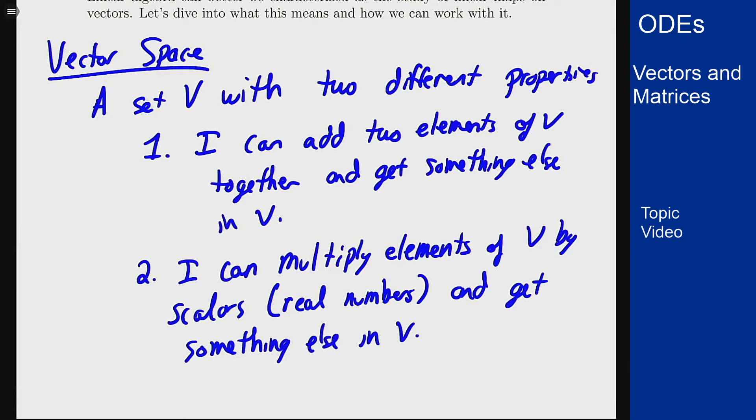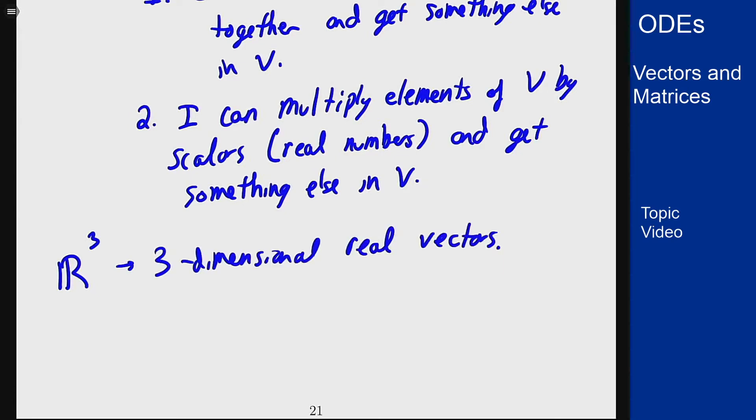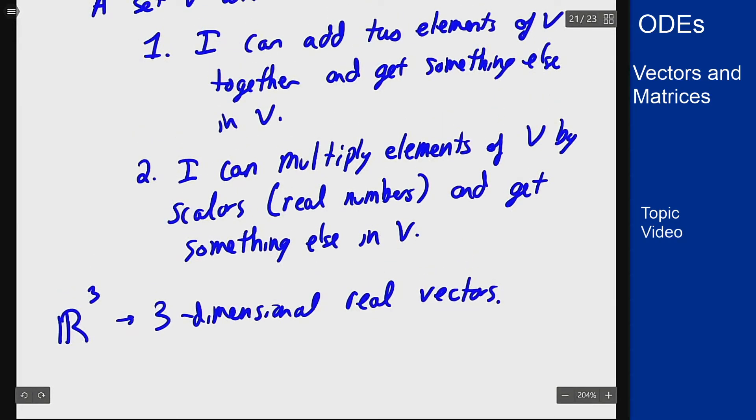Our examples from before still work. If I look at R³, three-dimensional real number vectors, this is a vector space under this definition. If I take two of these vectors I can add them together and get another real vector. I can also multiply them by real numbers and get something else in V, in this vector space.